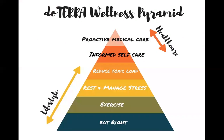This is the wellness pyramid that doTERRA adheres to when talking about essential oils as a lifestyle. Exercising and eating right are at the base, because our lifestyle affects our body, mind, and spirit. We have only one body and one life, and I take exercising and eating right very seriously. The top four pillars are where essential oils come into play. At the top we have proactive healthcare and informed self-care — when we learn about natural options, we become more comfortable with the body's ability to heal, and we find ourselves at the doctor less often. We also have to do everything we can to reduce our toxic load and manage stress.